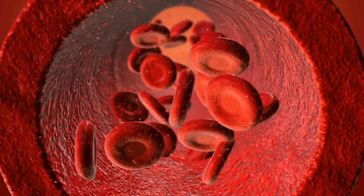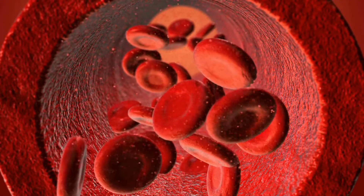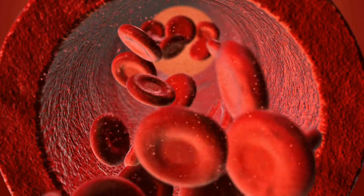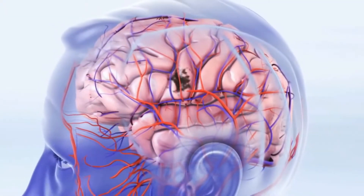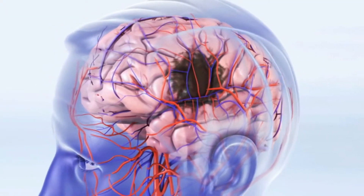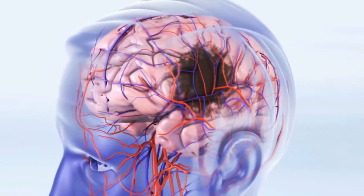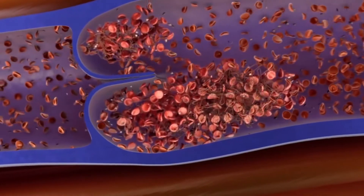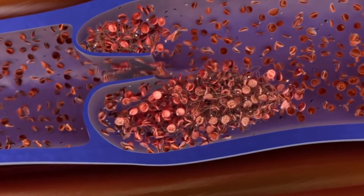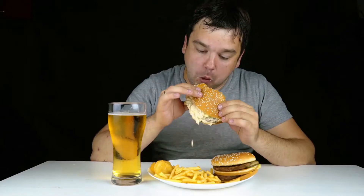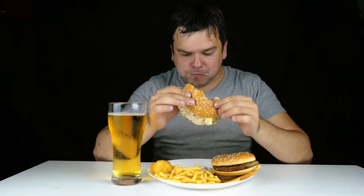A stroke can also cause dementia by decreasing the blood supply to the brain, resulting in the death of brain cells. The risk factors for stroke include hypertension, diabetes, obesity, and unhealthy eating habits.